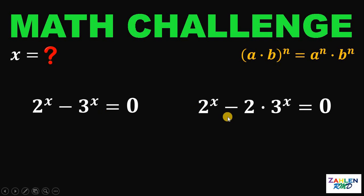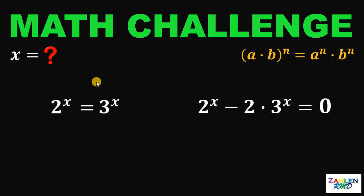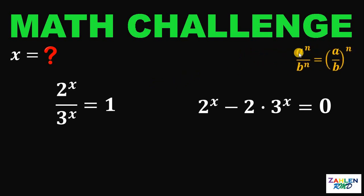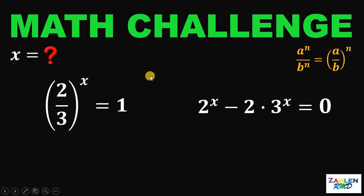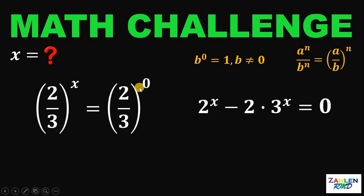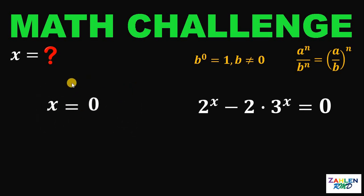Let's solve for x using these two equations. On the first equation, we have 2 raised to x minus 3 raised to x equals 0. Add 3 raised to x on both sides, then divide both sides by 3 raised to x. Using the law of exponents, a raised to n over b raised to n equals a over b raised to n, so 2 raised to x over 3 raised to x is 2 over 3 raised to x. Since any base raised to 0 equals 1, this 1 can be replaced with 2 over 3 raised to 0. Clearly, x must be equal to 0 from the first equation.